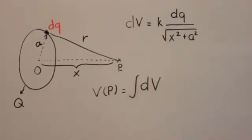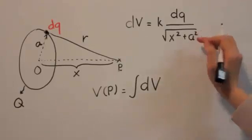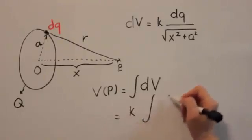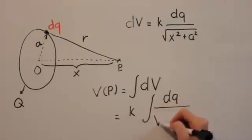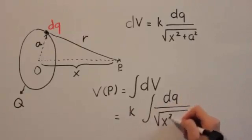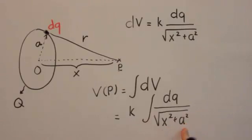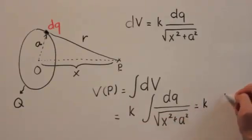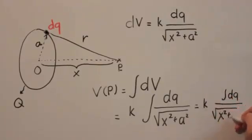Because the ring is a continuous charge distribution, we have to use integration. We put this formula in and we get k dq over square root of x squared plus a squared. Remember, x and a here are just constant numbers, so we can take them out of the integral.